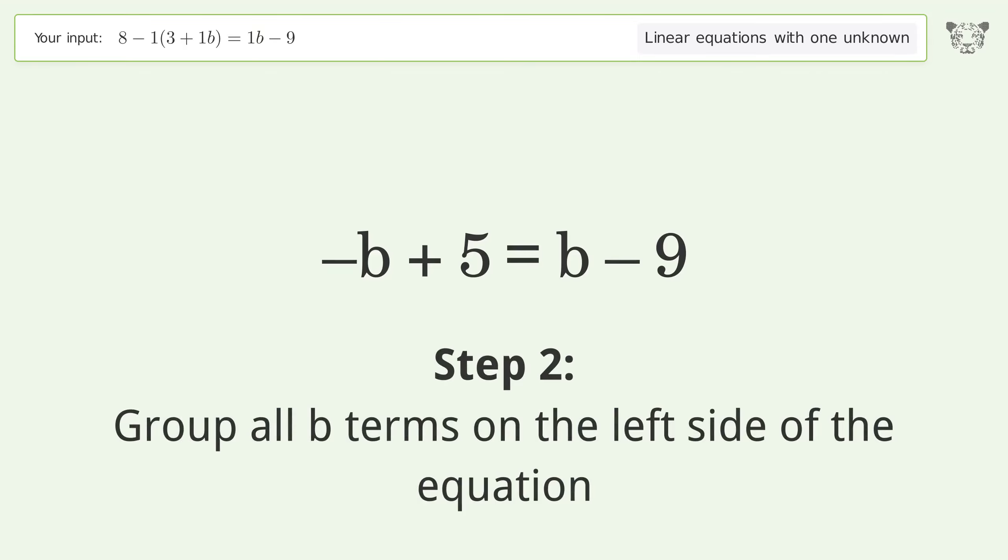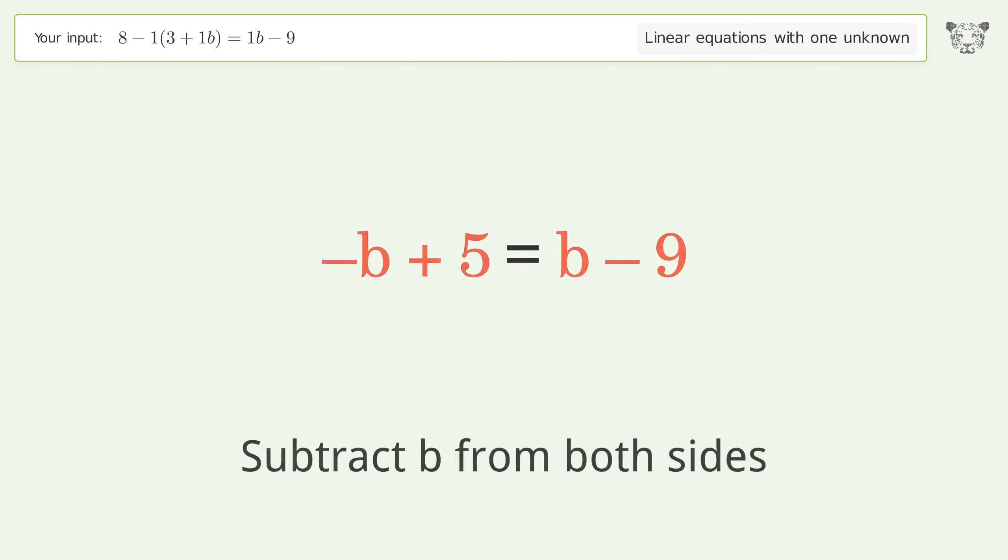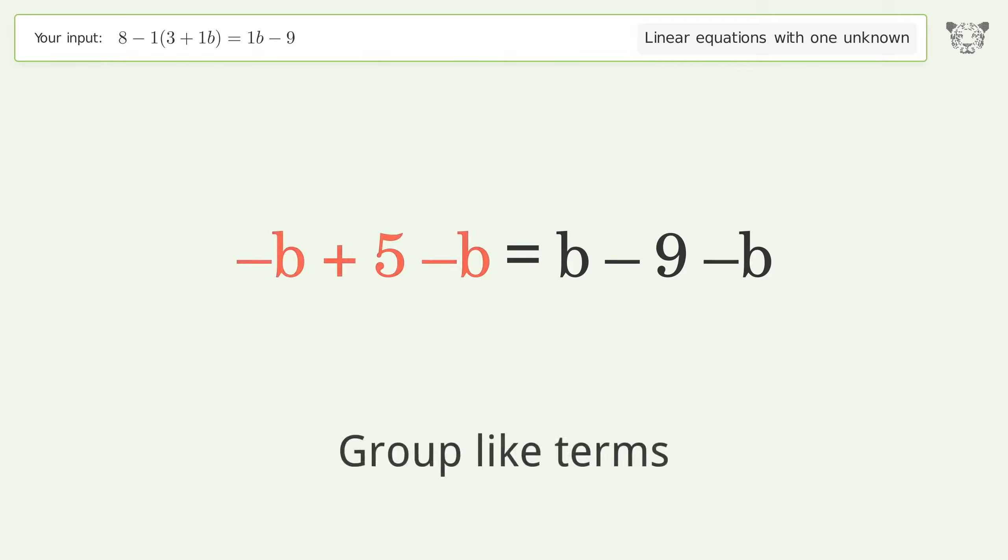Group all b terms on the left side of the equation. Subtract b from both sides, then group like terms.